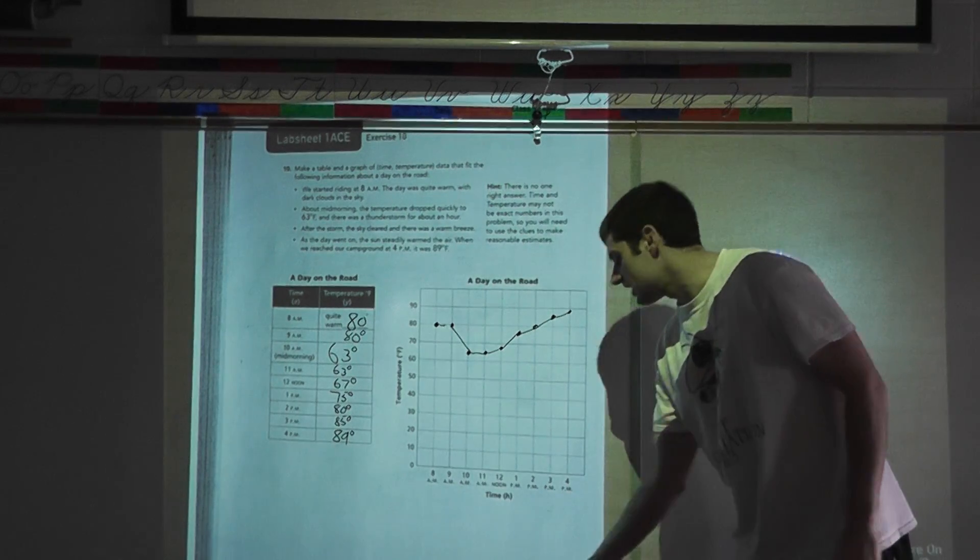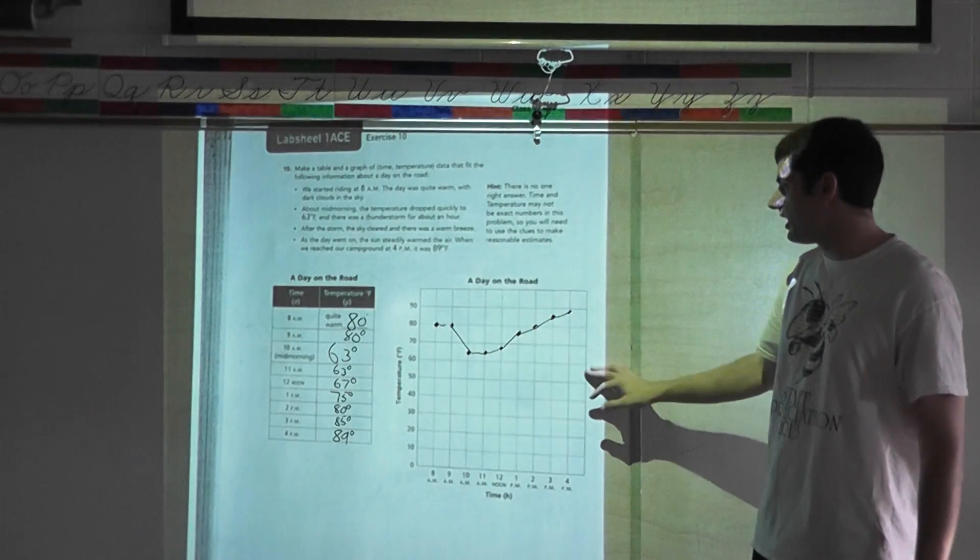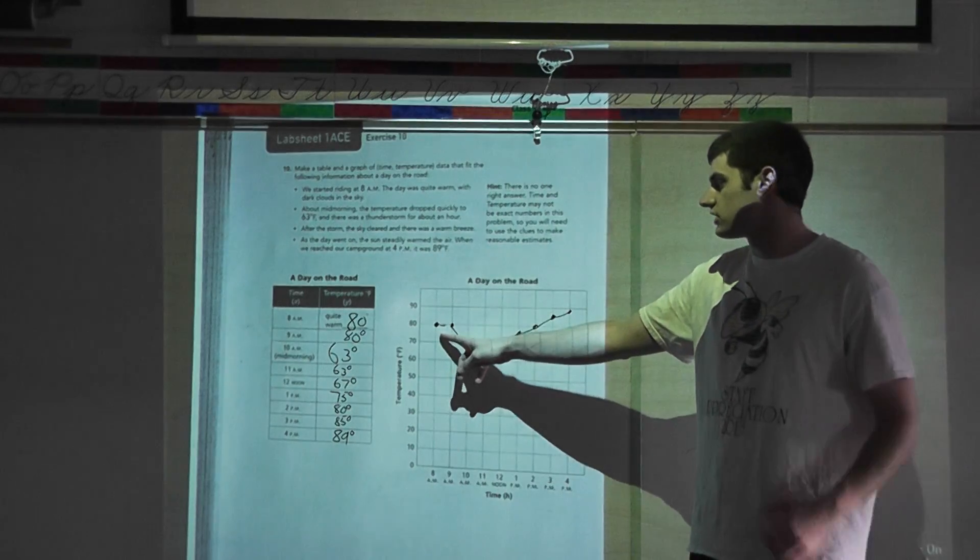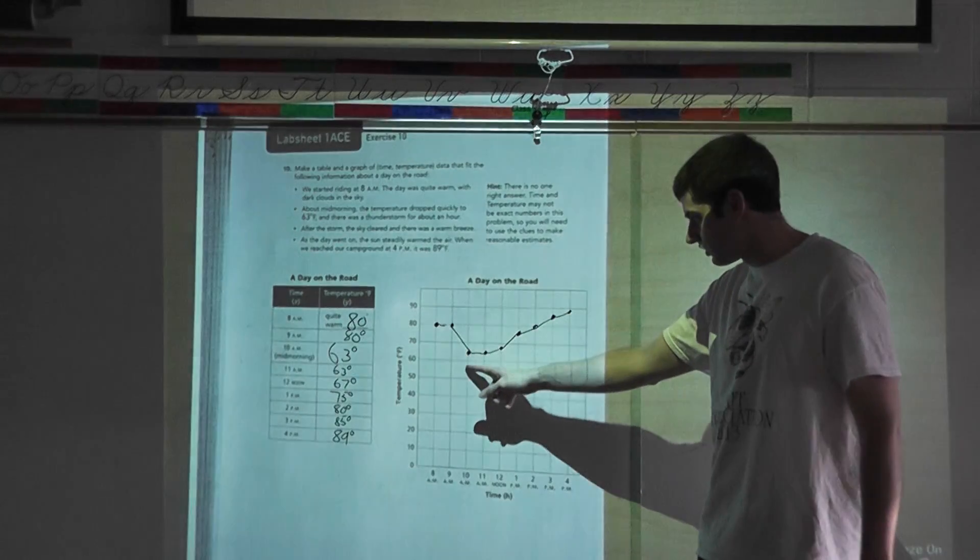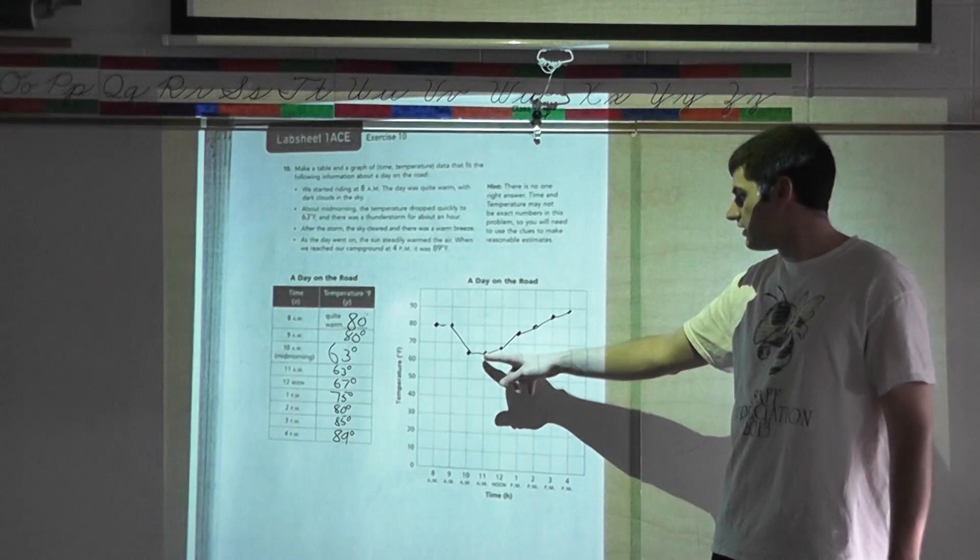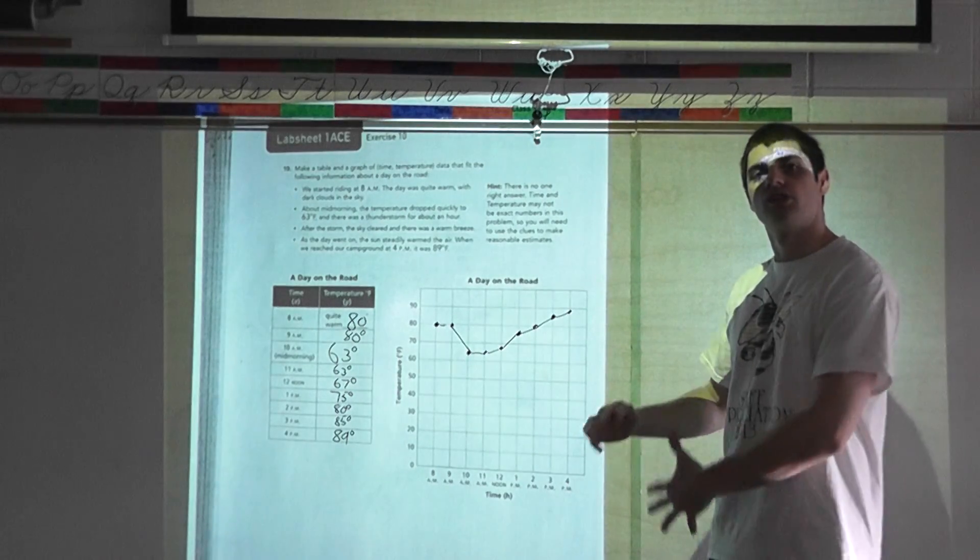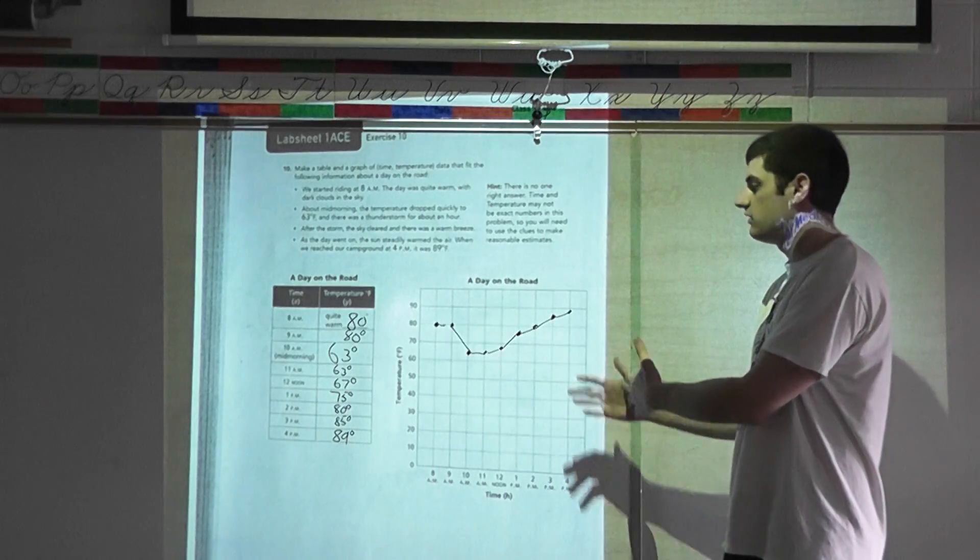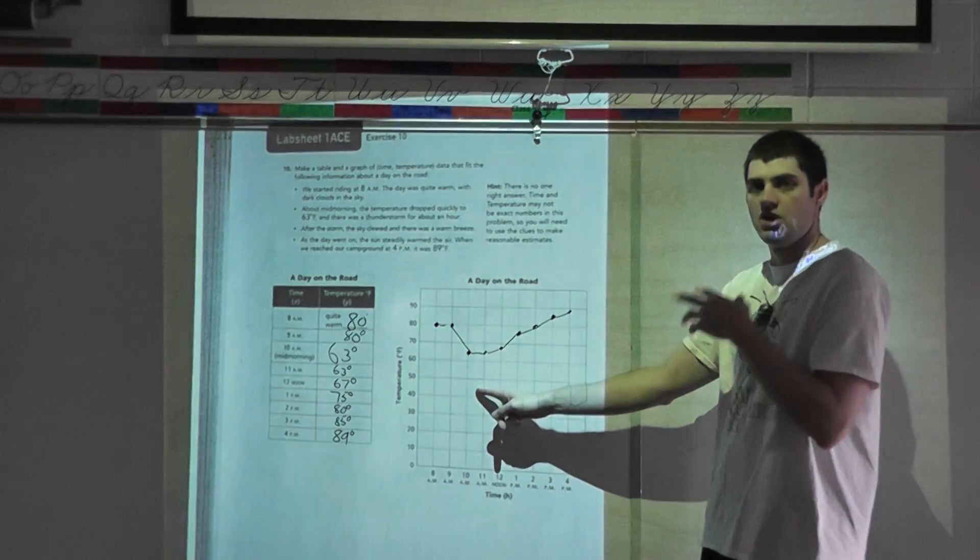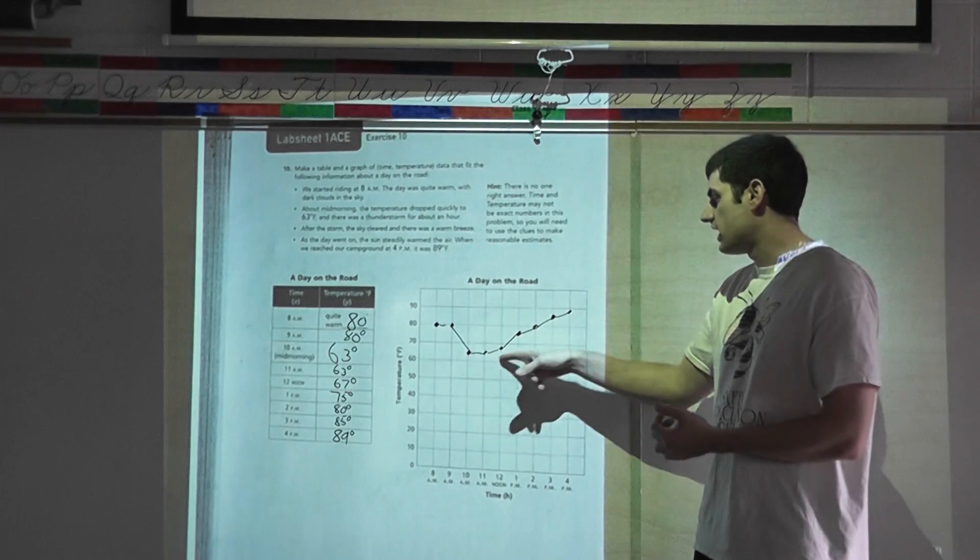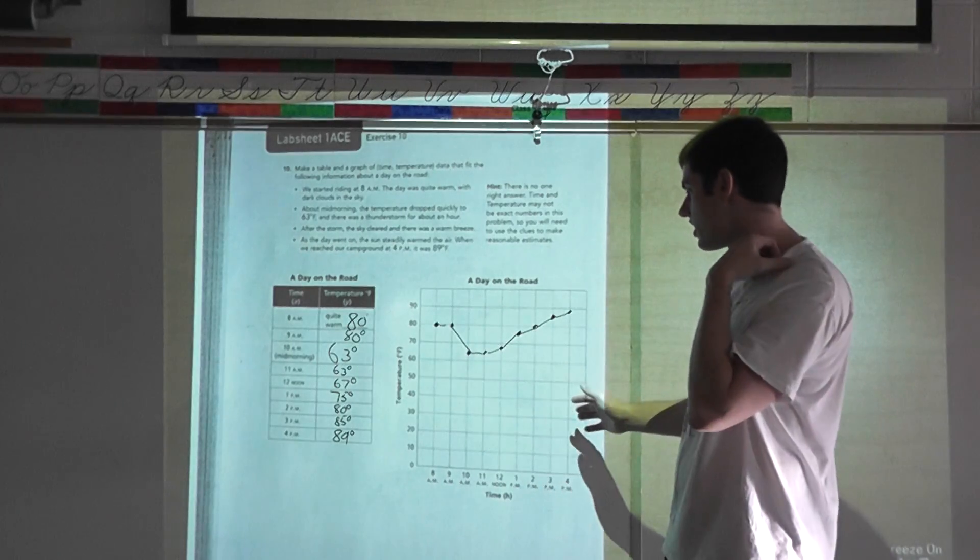And there's my table. So as I look at this information up here, I took what I saw in the table, and then I looked at it in a graph format. And we can see the morning starts off at a nice, easy temperature at 80 degrees. The thunderstorm happens. The temperature drops. For about an hour, it rains. And then after that hour, the temperature steadily increases until 4 p.m. when we get to the campground, and it's 89 degrees. So this graph tells a story.